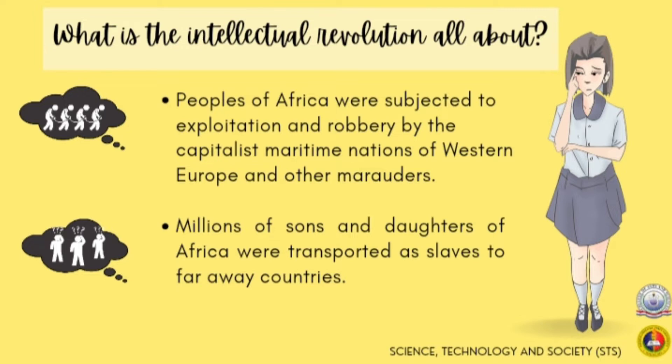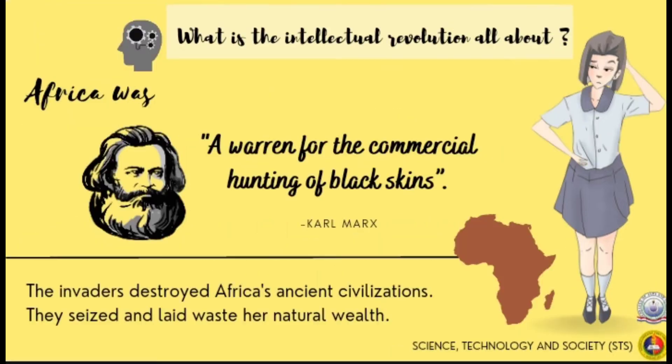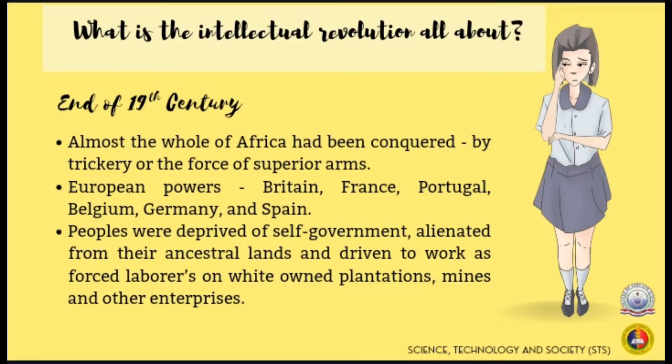What is the Intellectual Revolution all about? Peoples of Africa were subjected to exploitation and robbery by the capitalist maritime nations of Western Europe and other marauders. Millions of sons and daughters of Africa were transported as slaves to faraway countries. Karl Marx's perspective about Africa was a warrant for the commercial hunting of black skins. The invaders destroyed Africa's ancient civilization. They seized and laid waste her natural wealth. By the end of the 19th century, almost the whole of Africa had been conquered.